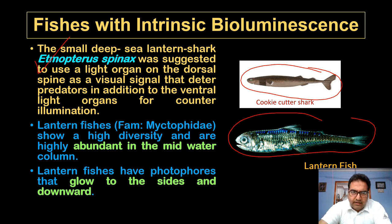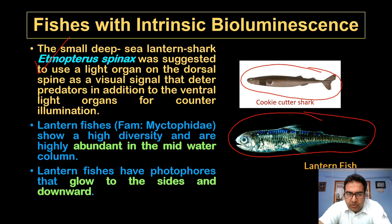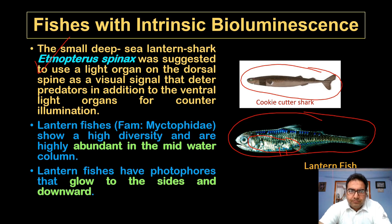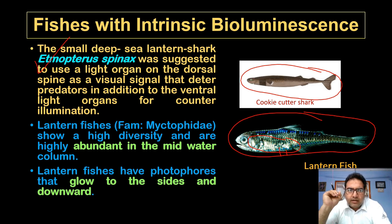Lantern fishes belonging to family Myctophidae show high diversity and are highly abundant in midwaters. These lantern fishes have photophores that glow to the sides and downwards. They also show large numbers of photophores that produce strong and very short light flashes to attract prey.